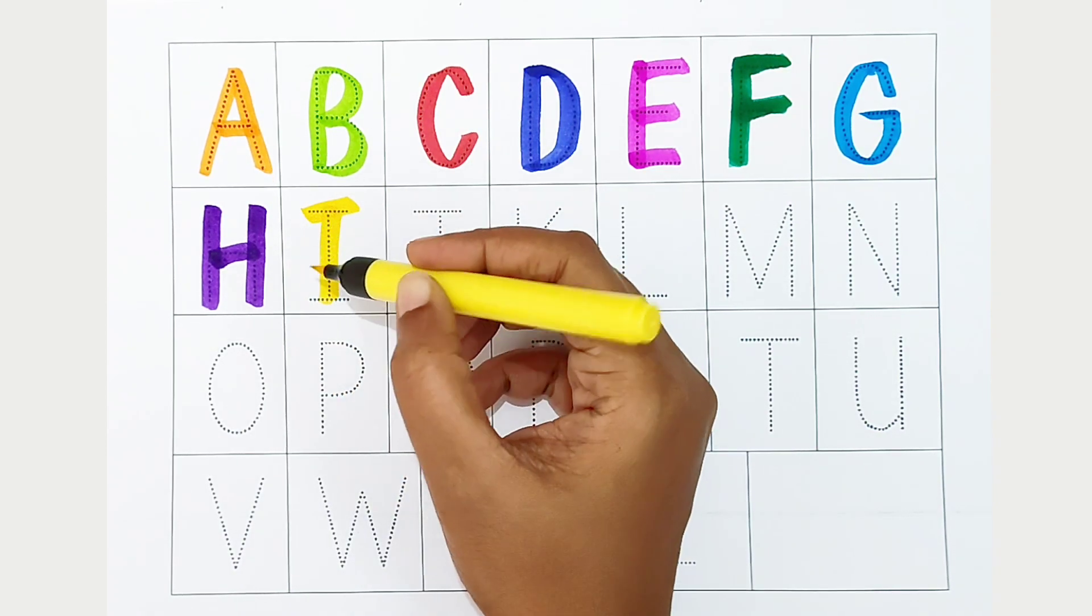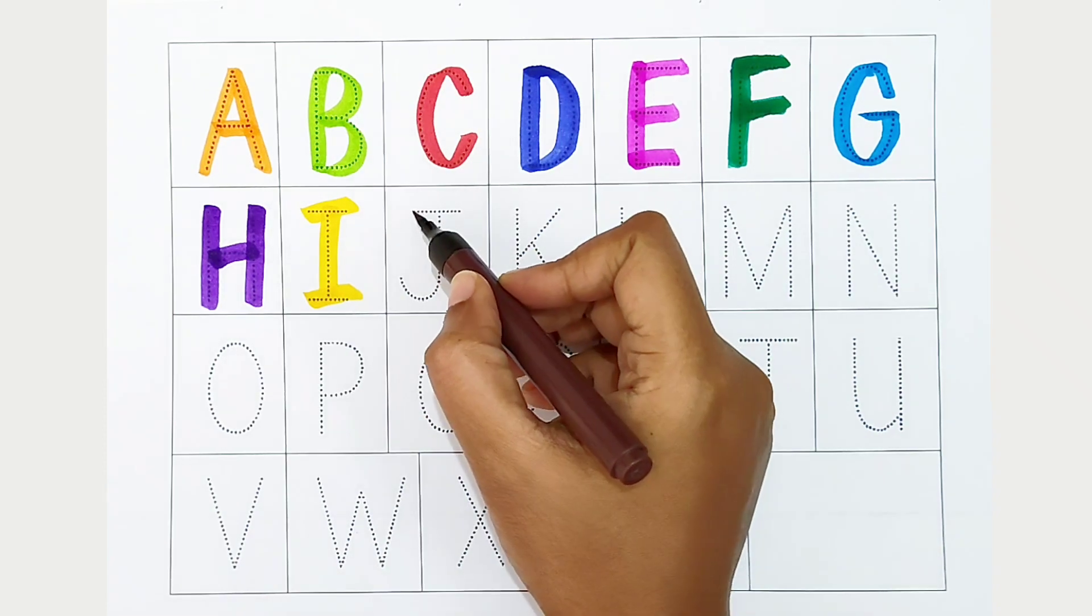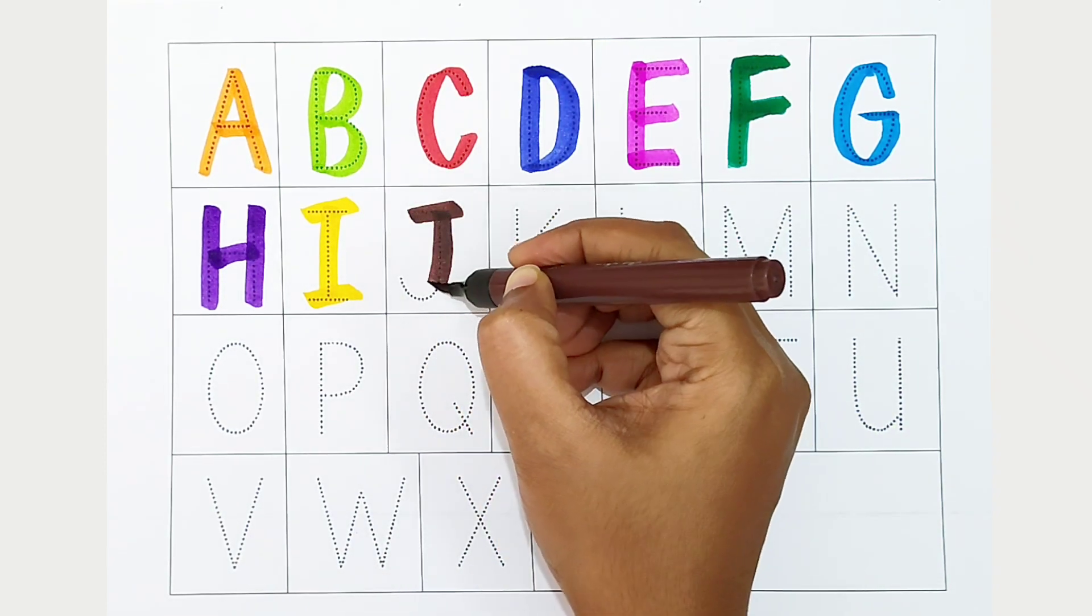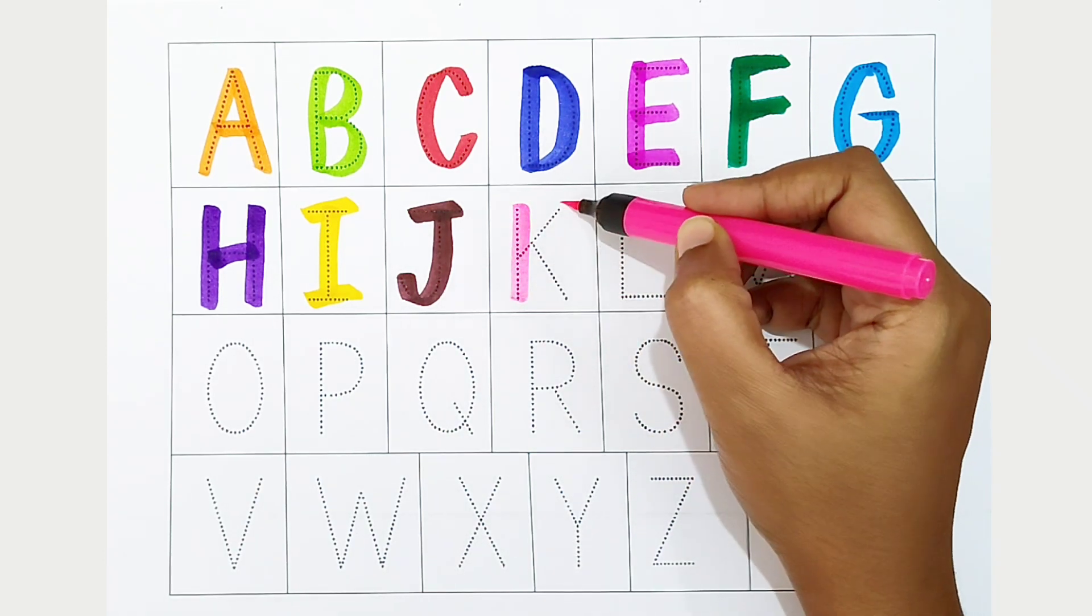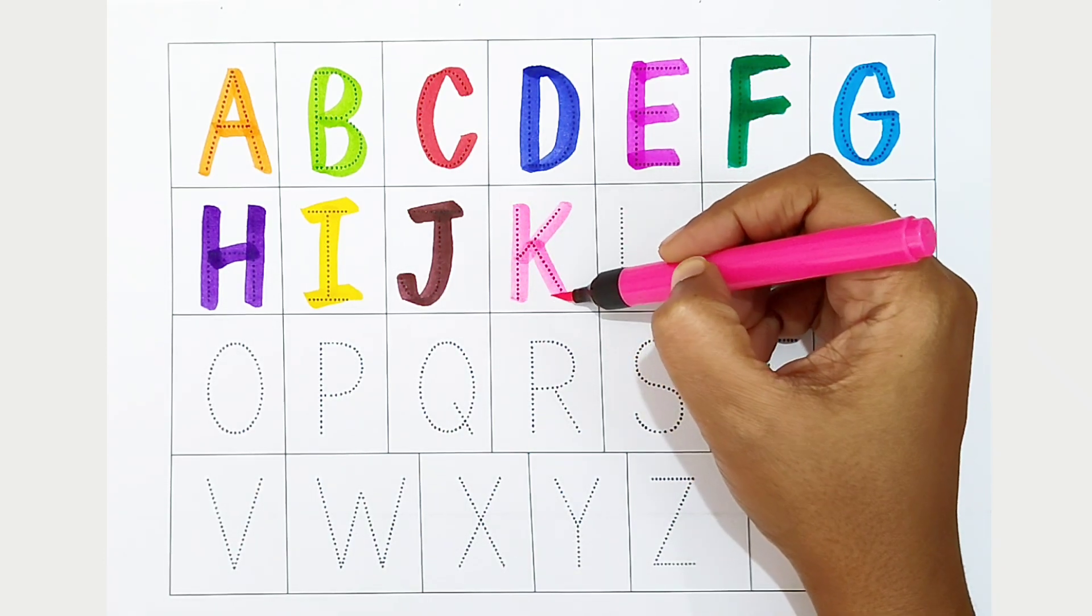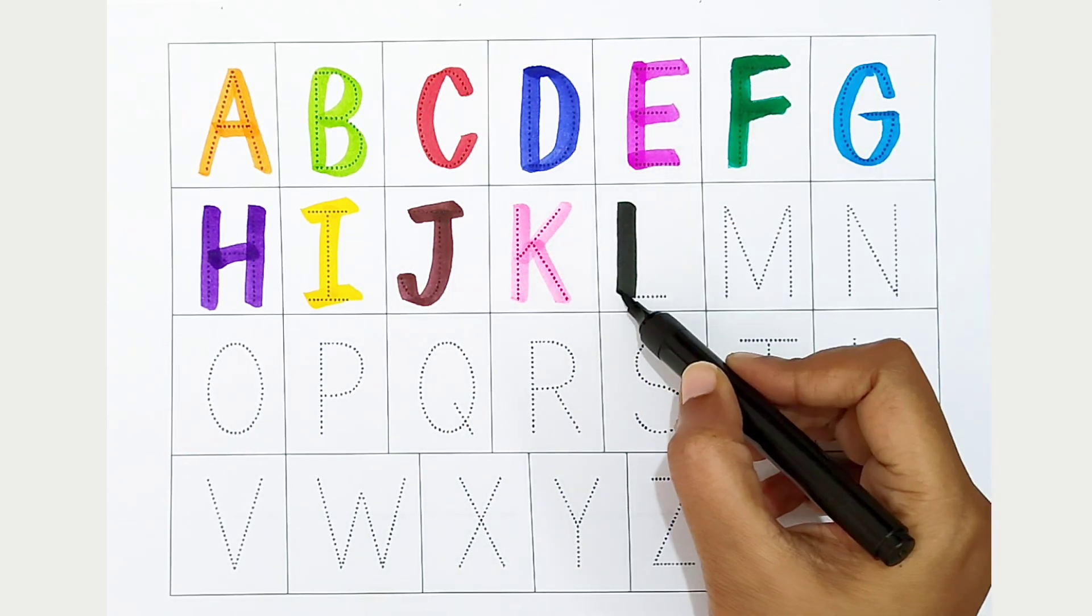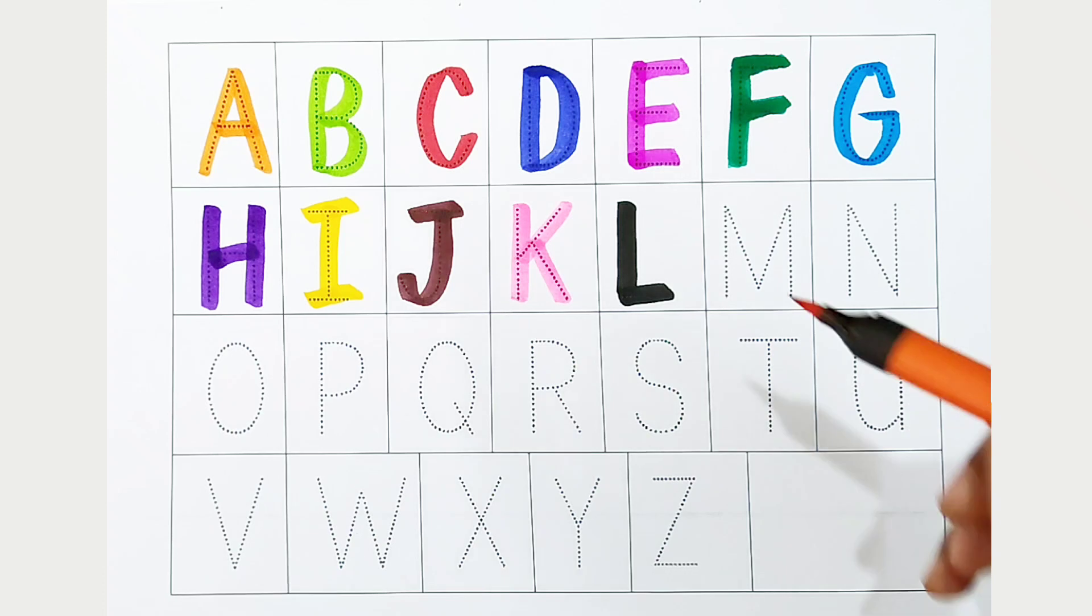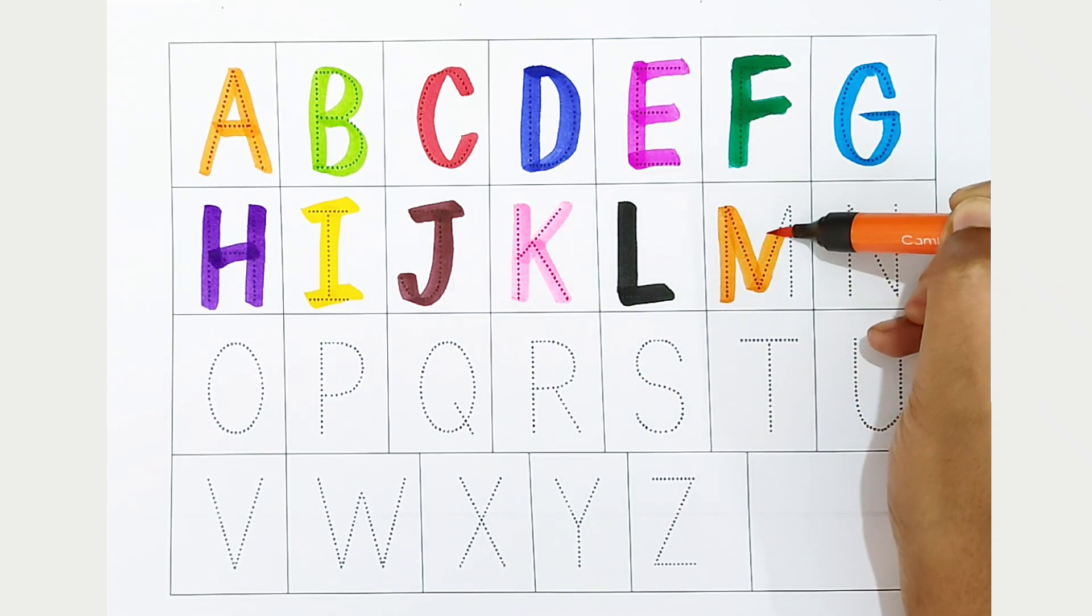J, brown color, J is for jaguar. K, light pink color, K is for kangaroo. L, black color, L is for leopard. M, orange color, M is for monkey.